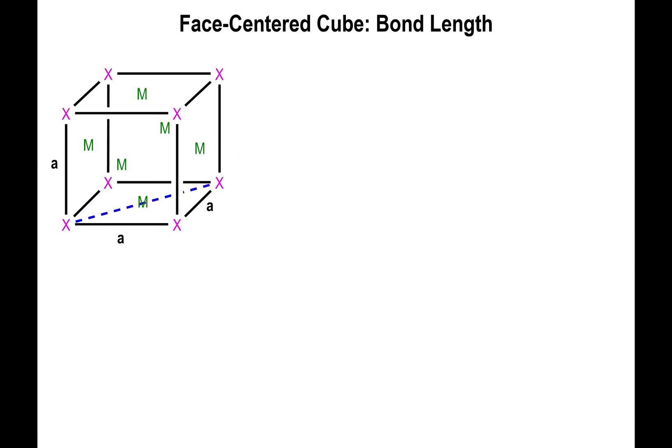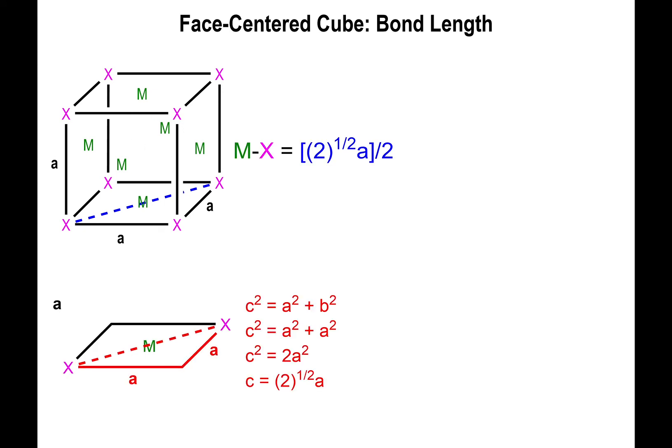Otherwise, if it's a regular face-centered cubic with no middle atom present, then you simply apply the formula that I showed you. At that point, you just make sure to input the value of a, which is the length of the unit cell, and you'll find out what the actual bond length is. This length could be given in angstroms, nanometers, picometers—any type of length unit will apply.